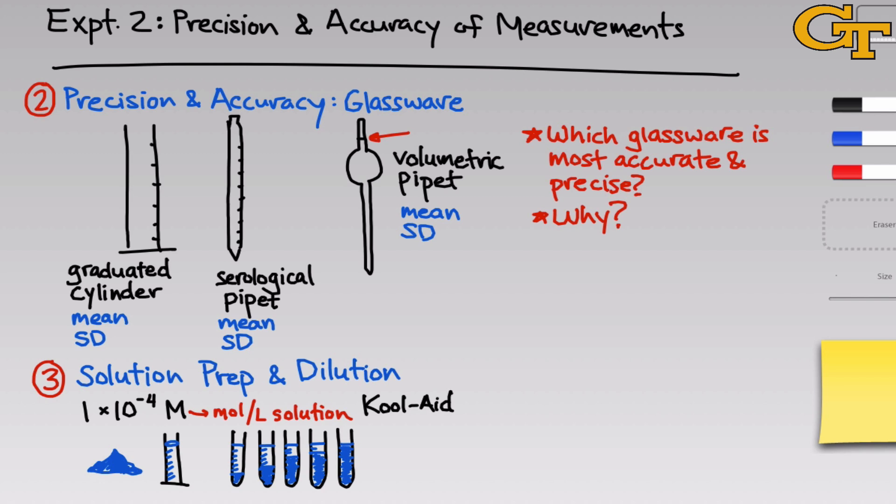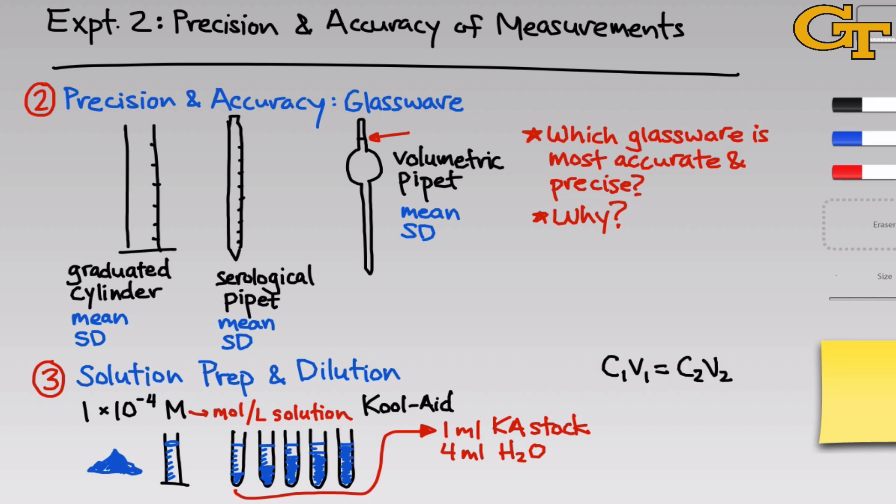For example, we'll do 4 mL of water and 1 mL of Kool-Aid, or 3 mL of water and 2 mL of Kool-Aid, etc. An interesting problem that comes up is: what's the concentration of Kool-Aid powder in these diluted solutions where we've added water? For example, if we take 1 mL of Kool-Aid stock and 4 mL of H₂O, how can we determine the final concentration? We can use what's called the dilution relation: C₁V₁ = C₂V₂.